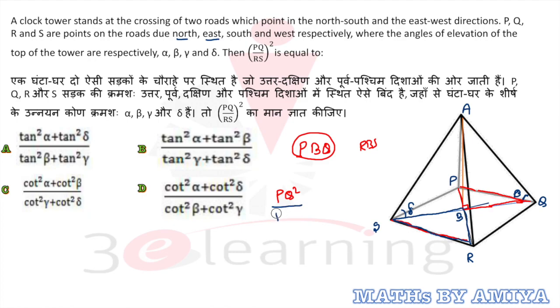We can say the PQ squared upon RS squared is actually hypotenuse. The PQ squared is nothing but PB squared plus BQ squared. Now RS squared is what? RS squared is nothing but SB squared plus BR squared.